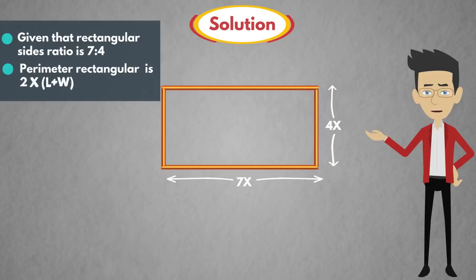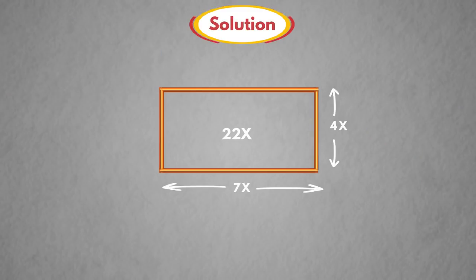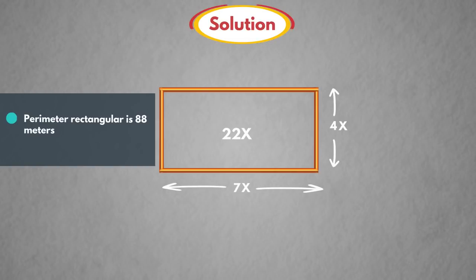Perimeter of the rectangle is 2 into L plus W. Here, length L is equal to 7x and width W is equal to 4x, is equal to 22x. Already know, perimeter of the rectangle is 88 m. So, 88 is equal to 22x. After solving this, x is equal to 4 m.